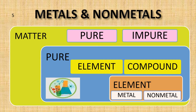An element is the pure form of matter that cannot be broken down into two or more simpler substances by chemical reaction on applying heat, light, or electricity. Examples of elements are gold, silver, copper, iron, zinc, hydrogen, oxygen, nitrogen, carbon, sulfur, phosphorus, etc. There are 117 elements known to us, of which 92 occur naturally. The smallest particle of an element is an atom, and elements are made up of only one kind of atom.